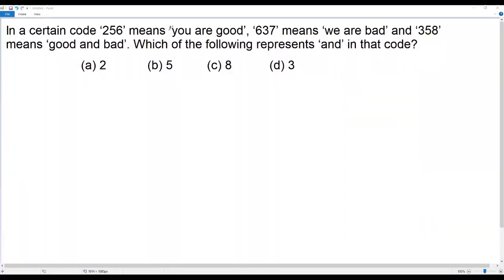Here we have a logical reasoning question that's on coding and decoding. Let's go to the question. In a certain code, 256 means you are good, 637 means we are bad, and 358 means good and bad. Which of the following represents AND in that code?